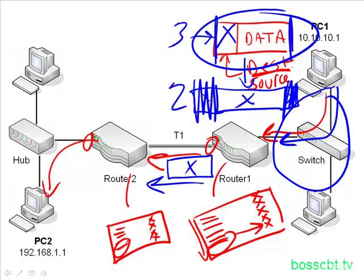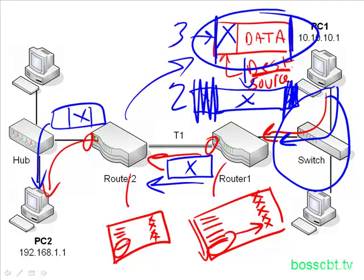Router 2 receives it, takes off the Layer 2 HDLC frame to get to the information in the IP packet. When it's ready to send it out on the Ethernet segment, it creates an Ethernet frame, puts the IP packet back in there, and sends it on its way to PC2. Encapsulation is a very important logistical step within the routing process. If you're looking at a Layer 2 network, the IP information — the packet — is inside the frame. Understanding that is really critical in terms of troubleshooting and understanding how a network actually functions.